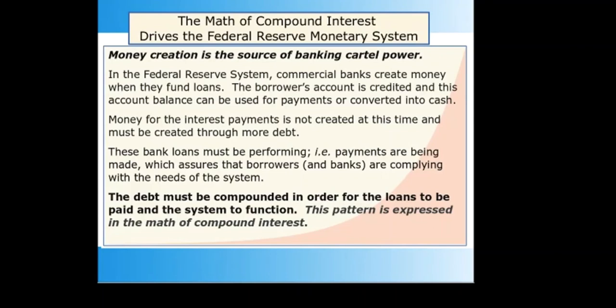Money is only available for activities that support debt repayment. This tends to direct society into activities such as industrial manufacture, military campaigns, financial speculation, suburban development, fossil fuel dependency, and consumerism. An important feature of these activities is they increase the need for money and debt. The banking cartel is not going to finance a path to reducing debt, which would reduce the cartel's influence. Monetary inflation or compounding debt is a fundamental part of the Federal Reserve monetary system, but this is disguised by the term "economic growth."